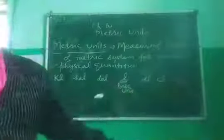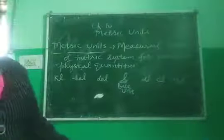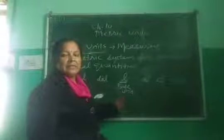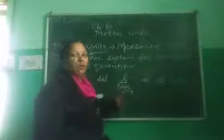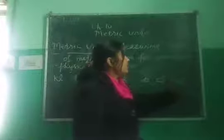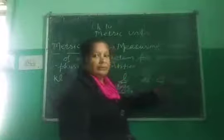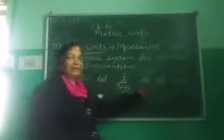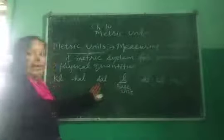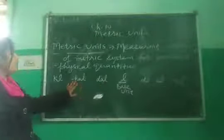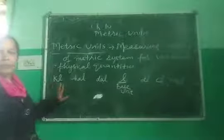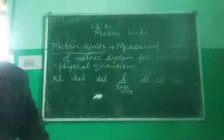If we are taking base unit as meter — units of length — then this will be called millimeter, centimeter, decimeter, meter (base unit), then decameter, hectometer, and kilometer. So these are the metric unit aggregations.